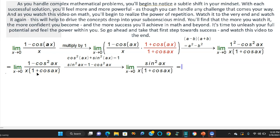We get the limit as x goes to 0 of sine squared ax over x times 1 plus cosine. Separate this now: limit as x goes to 0 of sine ax over x, and the other part is sine ax over 1 plus cosine ax. Now we continue.